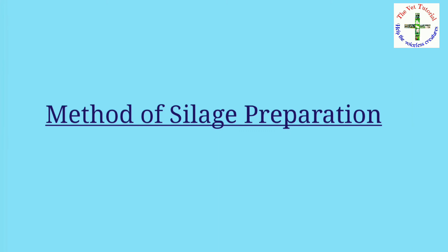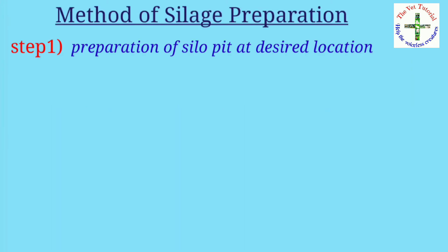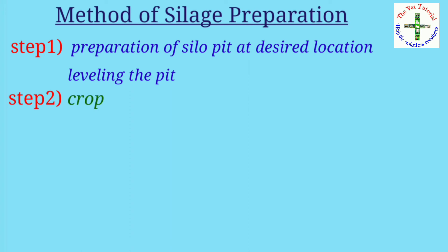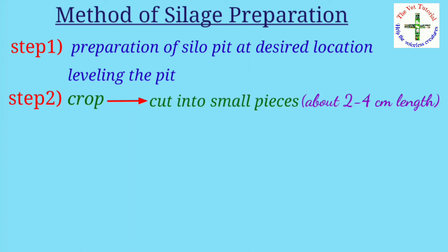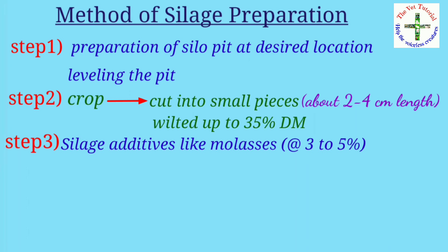The method of silage preparation: first, prepare the silo pit at a desirable location and level the pit. Second, the crop suitable for silage making is cut into small pieces of about two to four centimeters in length and wilted up to 35 percent dry matter.